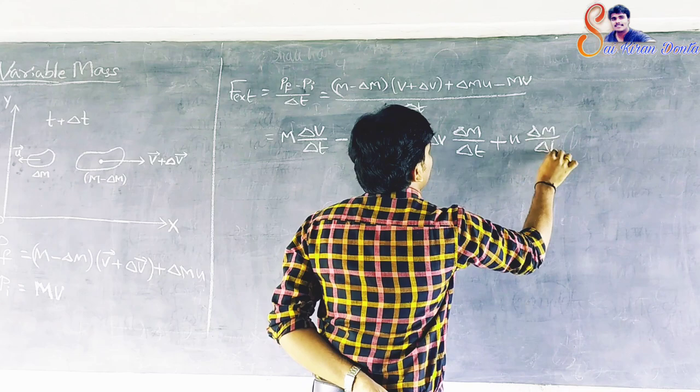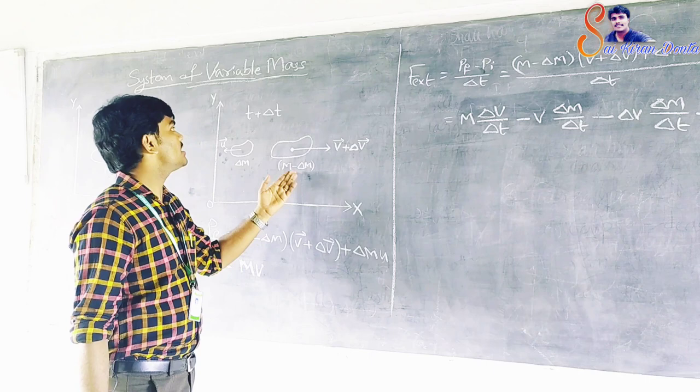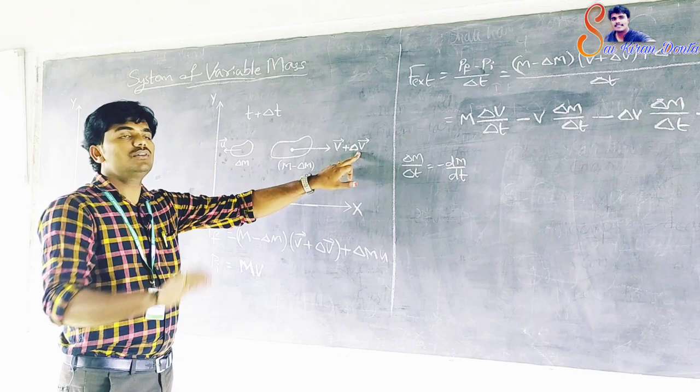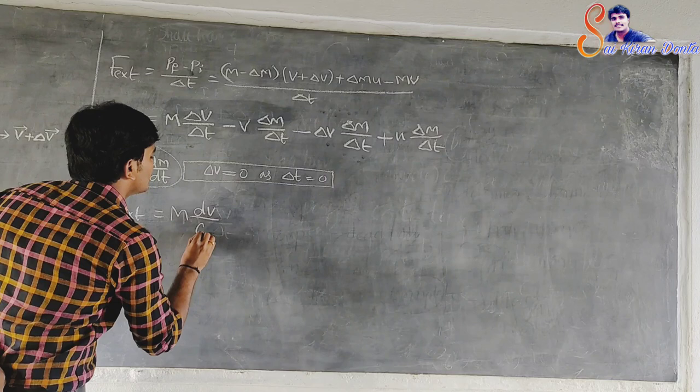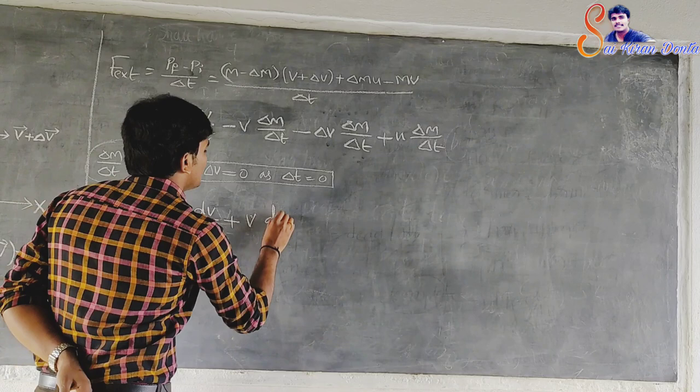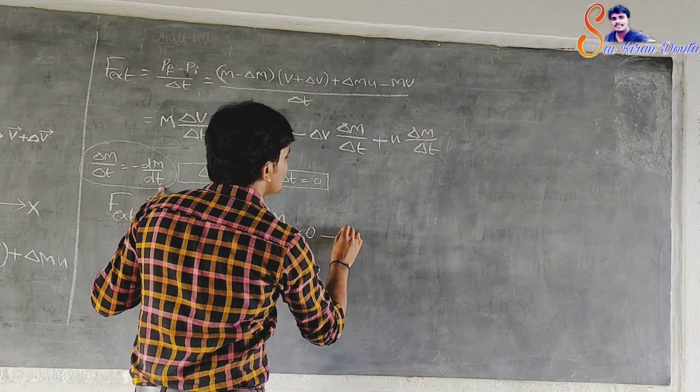If delta t approaches zero, the configuration of the right-hand side figure will become the left-hand side. Since there is a decrease in the mass with time, delta M by delta t is replaced by minus dM by dt. Finally, delta V goes to zero as delta t approaches zero. So the equation becomes F external equals M dV by dt minus U dM by dt.